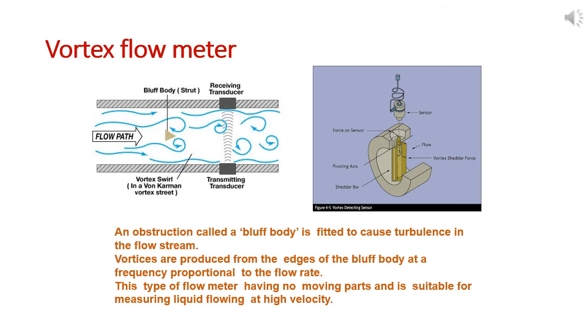Another type is the vortex flow meter. An obstruction called a bluff body is fitted to cause turbulence in the flow stream. Vortices are produced from the edges of the bluff body at a frequency proportional to the flow rate. This type of flow meter has no moving parts and is suitable for measuring liquid flowing at high velocity.